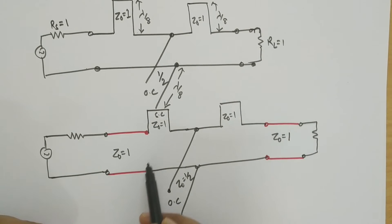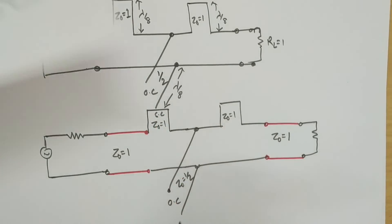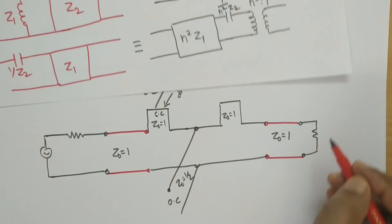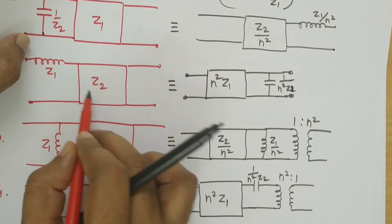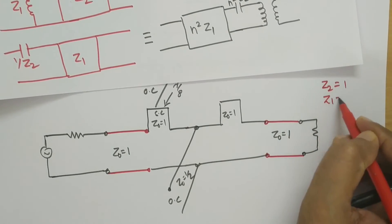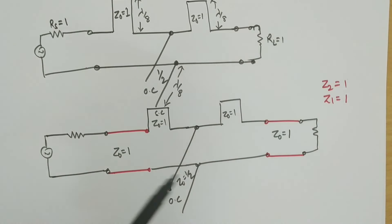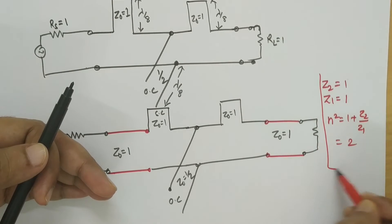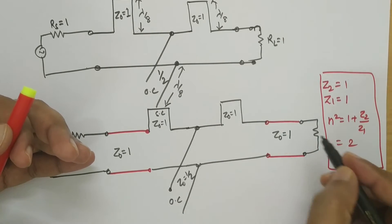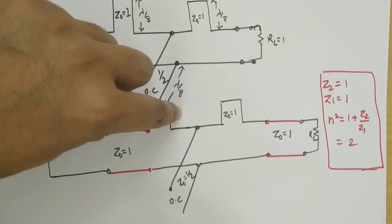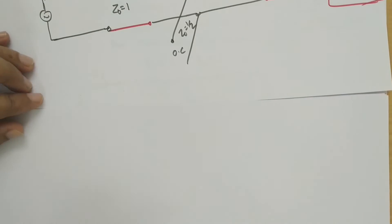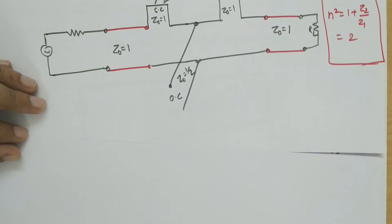Now there is a transmission line and one series stub. We call Z2 equal to the impedance of the transmission line, so Z2 equal to 1, and Z1 equal to 1 as well. We can calculate n squared here: 1 plus Z2 by Z1, which equals 2. This n squared value will be used for converting the series stub into a shunt stub in the next step.